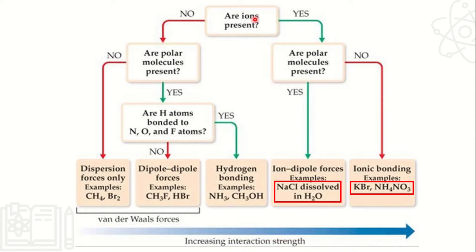Balik tayo sa simula ng flowchart. Are ions present? No — walang ion. Meron bang polar molecule? Kung walang polar molecule, that will be London dispersion, kasi nagkaroon ka lang ng temporary polar molecule — pansamantala lang yung naging polar molecule natin. Example are CH4 at NBr2. So balikan ng ating flowchart: are polar molecules present? Yes. Meron bang hydrogen na nagband sa nitrogen, oxygen, or fluorine? Kung meron, hydrogen bonding na siya agad. Kung wala, dipole-dipole.